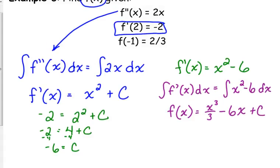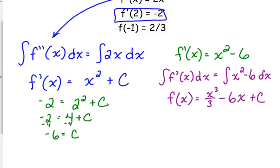We want to know the particular solution. So, guess what? They gave us one more piece of information, and we're going to use it. When the original function, when x equals negative 1, then the original function equals 2 thirds. So let's plug that in.